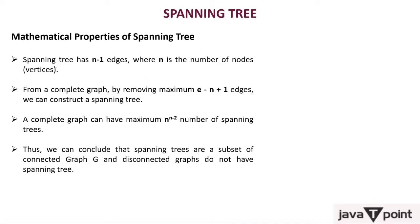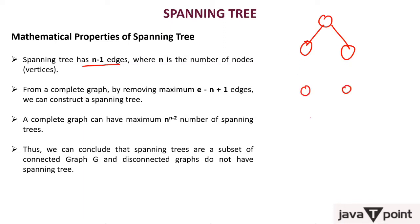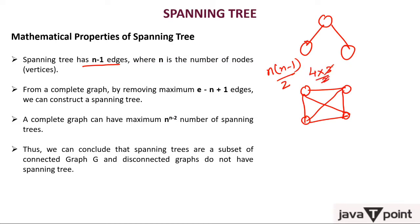Now for mathematical properties. A spanning tree has n minus one edges, where n is the number of nodes. A complete graph has n(n-1)/2 edges. With n = 4 nodes, that is 4 × 3 / 2 = 6 edges. By removing e minus n plus one edges — that is 6 minus 4 plus 1 equals 3 edges — we can construct a spanning tree.